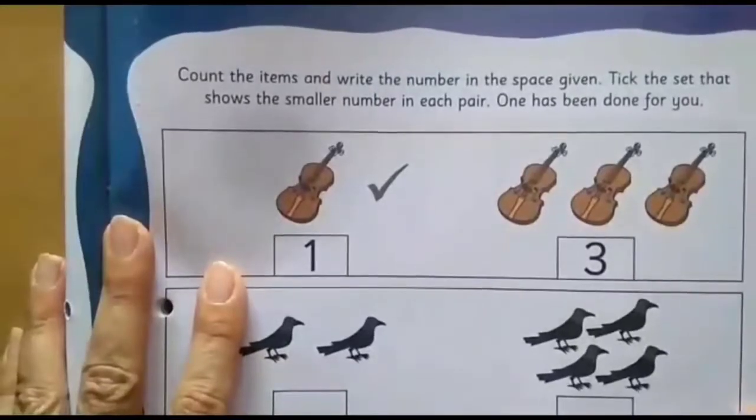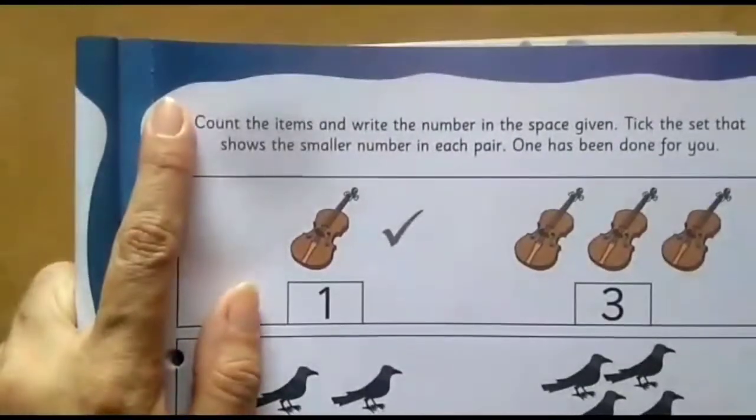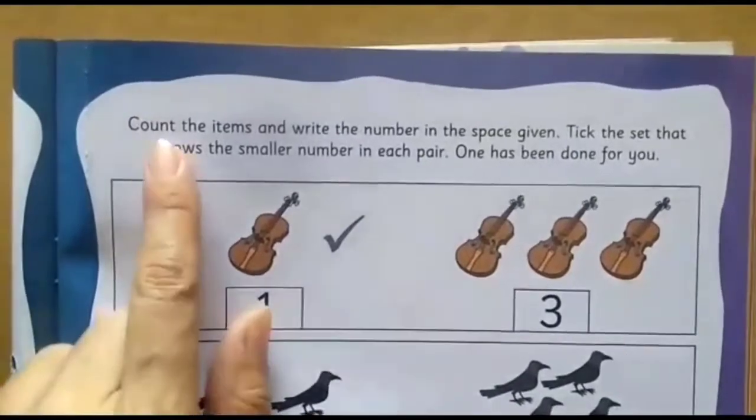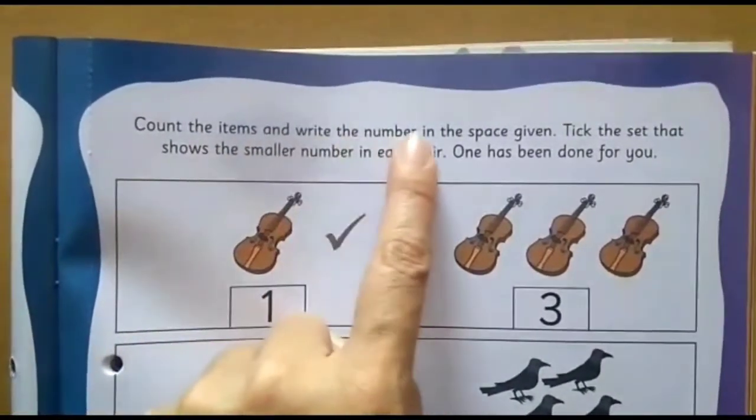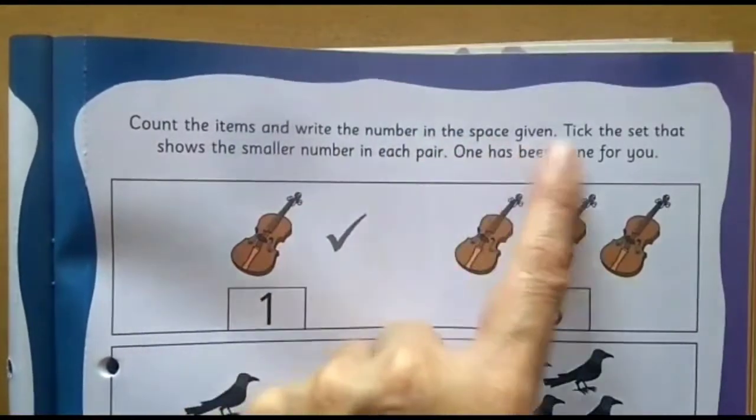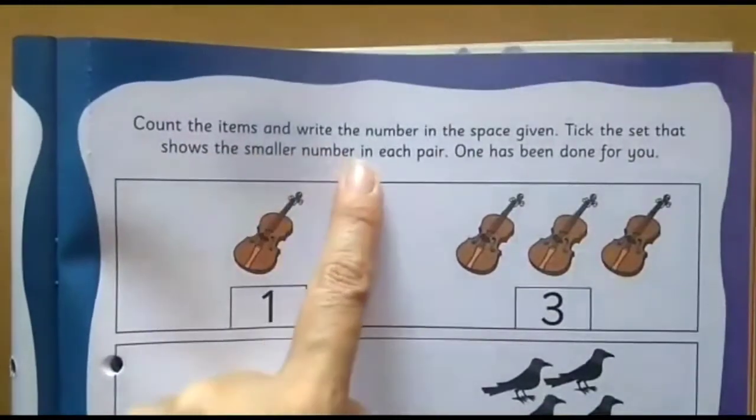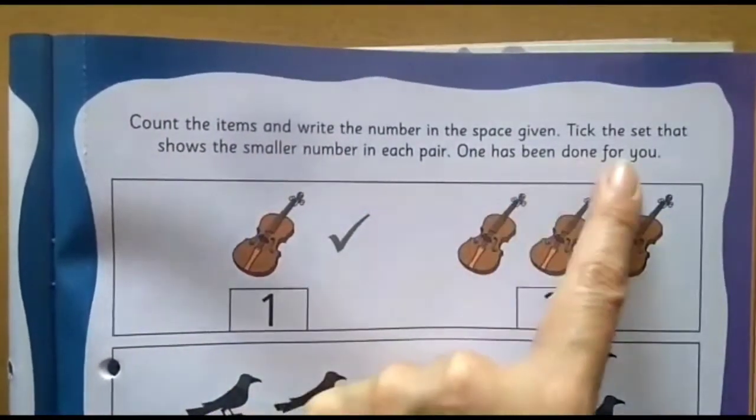As usual, after opening page number 57 on the top left you will write today's date. And now I am going to read the instructions for you. Count the items and write the number in the space given. Tick the set that shows the smaller number in each pair. One has been done for you.